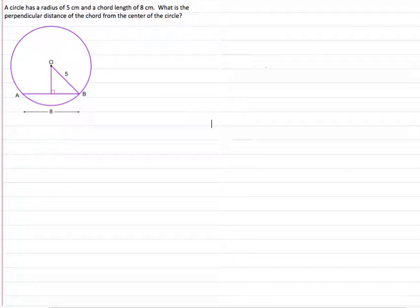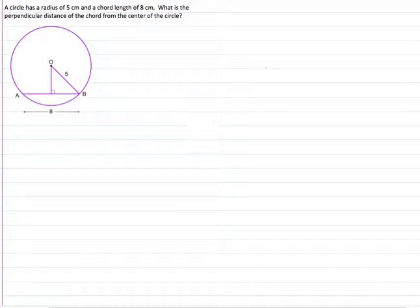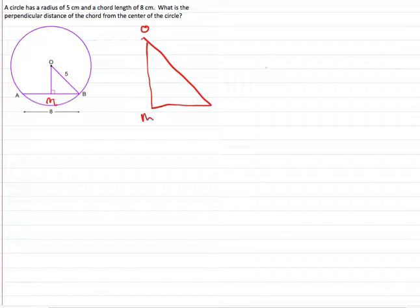In this video we want to find the perpendicular distance of a chord from the center of the circle. We know the circle has a radius of 5 centimeters and a chord length of 8. Looking at our picture, we can see a right triangle made from O to B. We'll call the midpoint M, so we have triangle OMB with a hypotenuse of 5. Because this is a perpendicular bisector, it divides the chord right in half, so each half is 4.